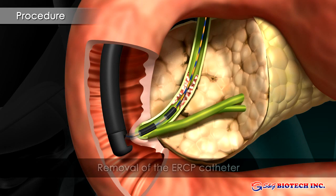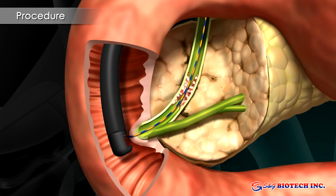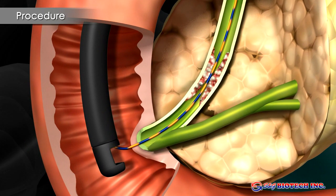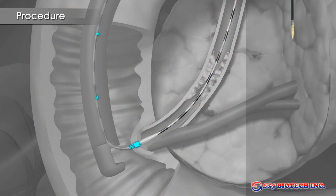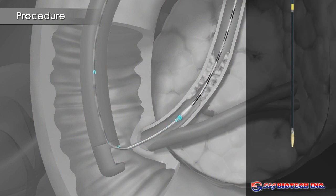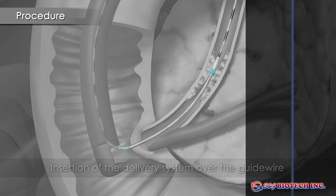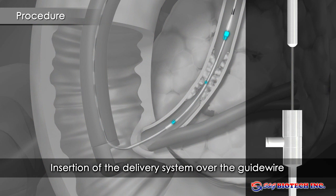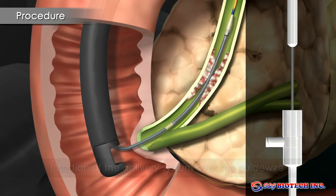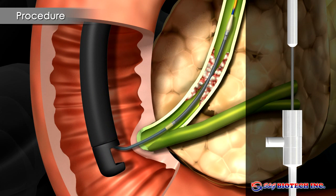The ERCP catheter is removed and the stent delivery system advanced across the stricture. The stent is positioned with reference to the radiopaque markers. It should extend 1-2 cm beyond the ends of the stricture.